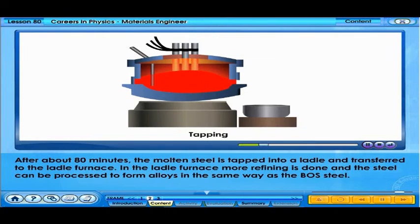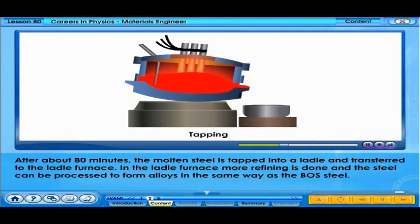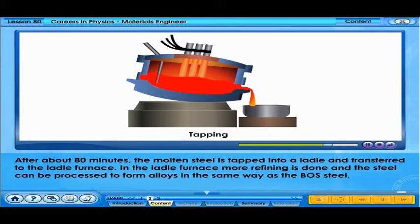After about 80 minutes, the molten steel is tapped into a ladle and transferred to the ladle furnace. In the ladle furnace, more refining is done, and the steel can be processed to form alloys.